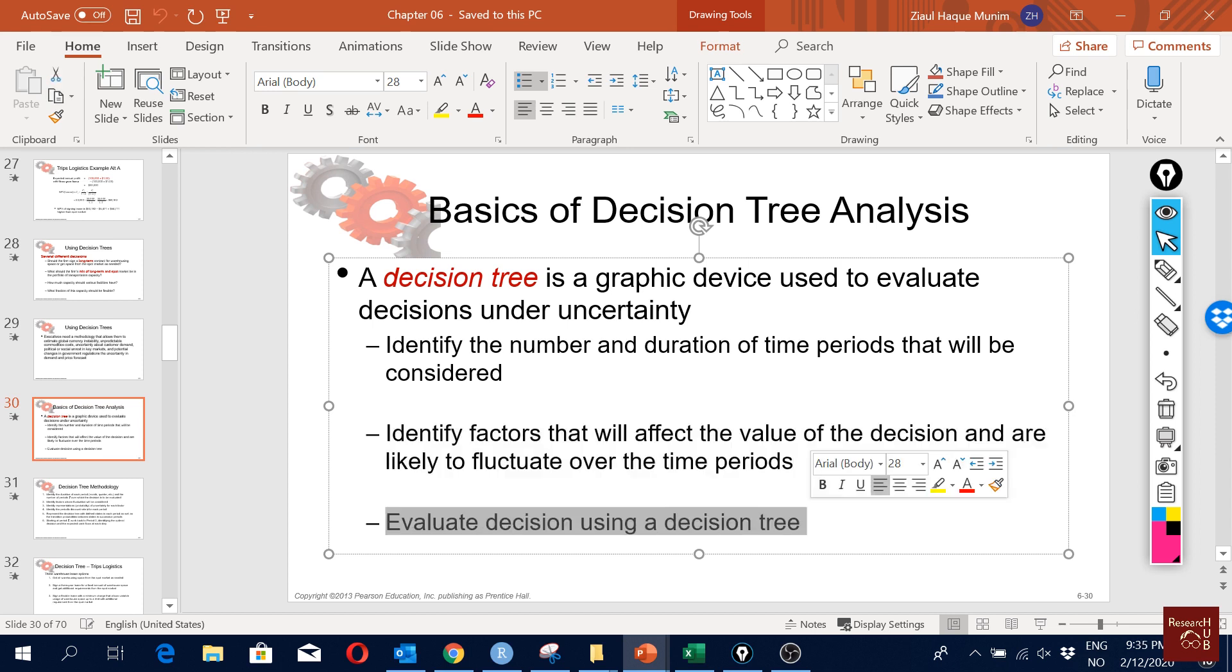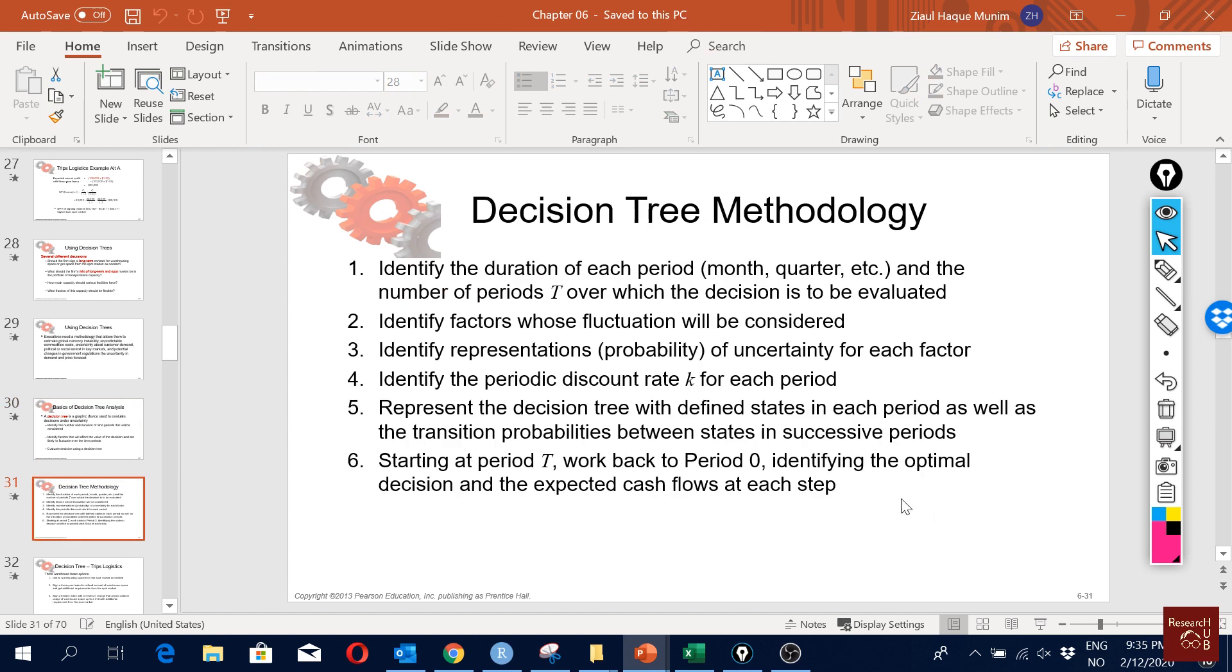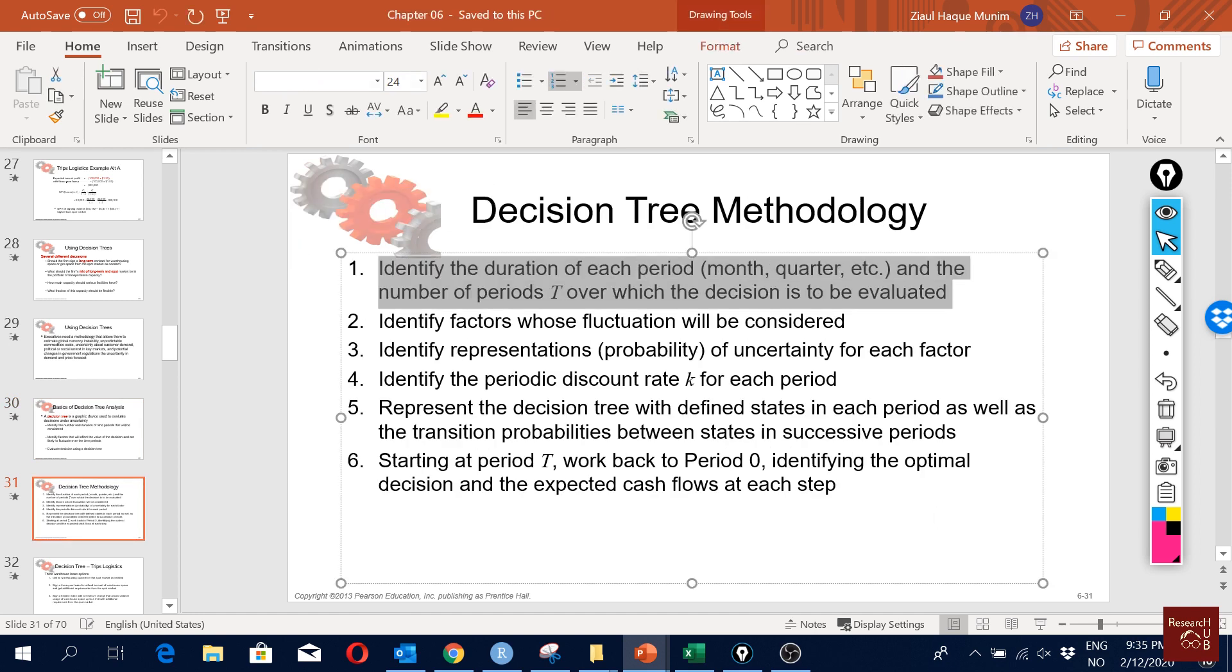We can summarize it in six steps. The first one is identify duration of each period—it could be month, quarter, year—and the number of time periods over which the decision will be evaluated.